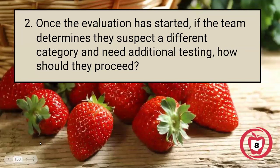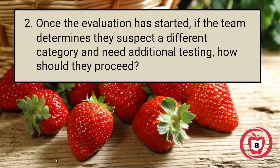This next slide is really the flip side: once the evaluation is started, what happens if you realize you do suspect a different category and need additional testing? That should be the vast majority of cases when there's any kind of change. You've started the process and realize, oh, maybe we should be looking at autism or OHI.